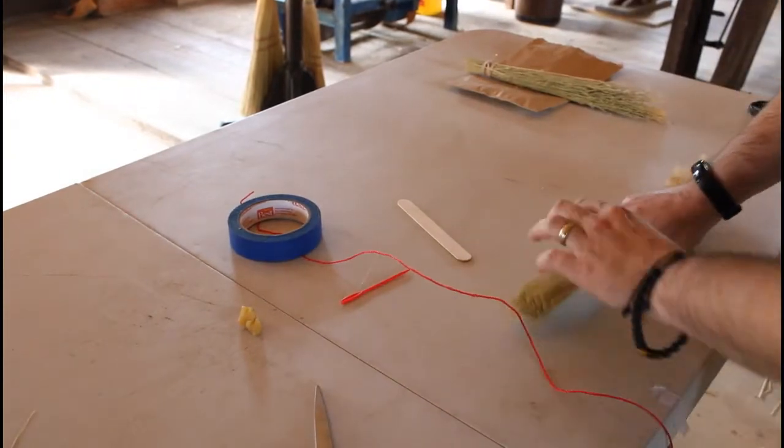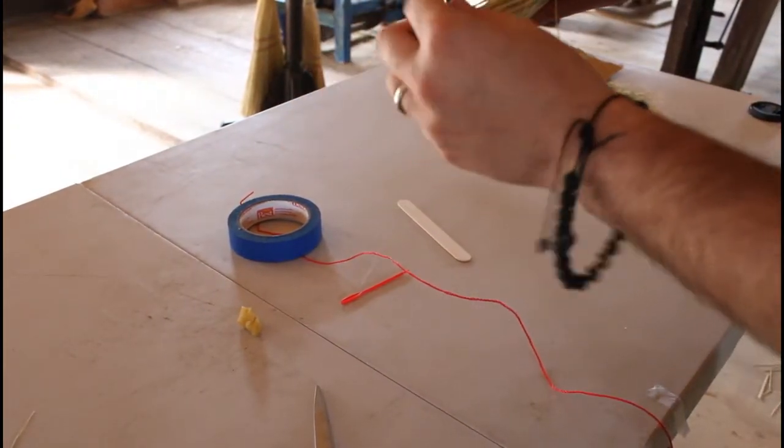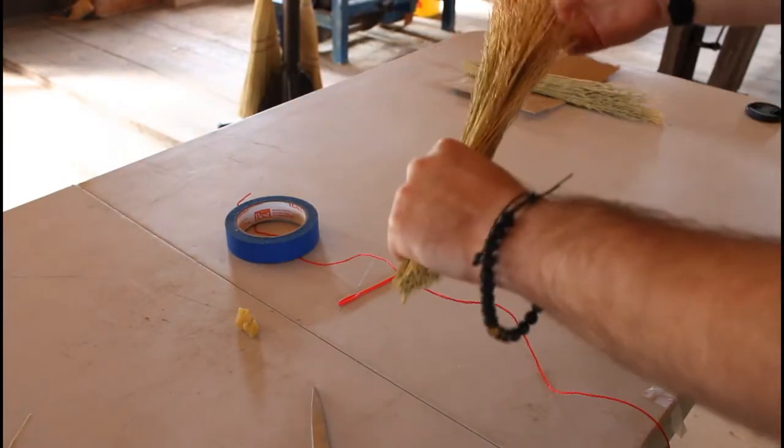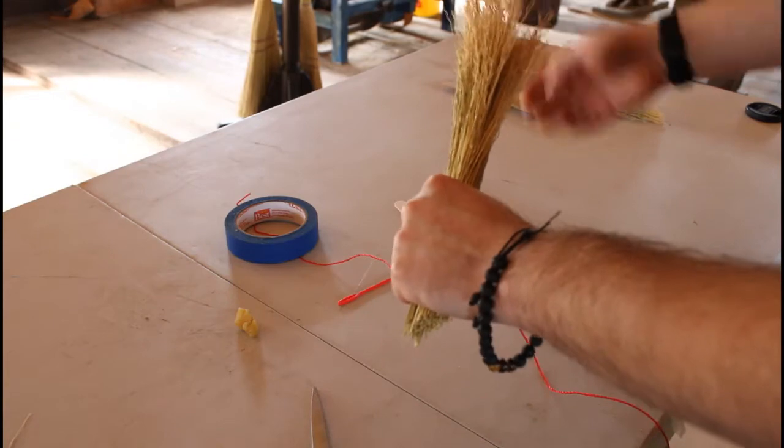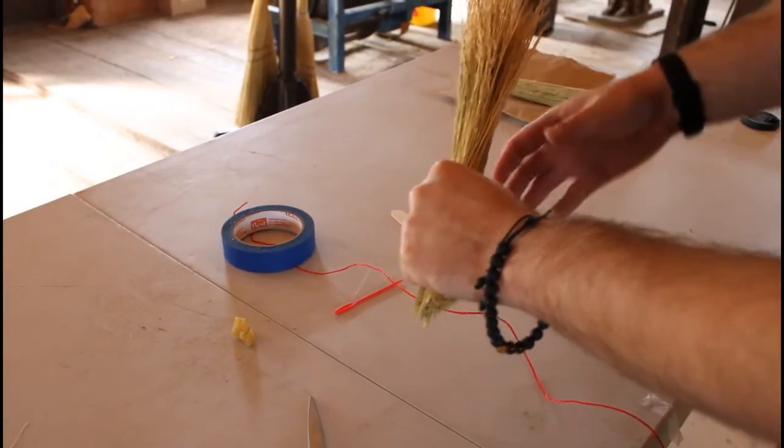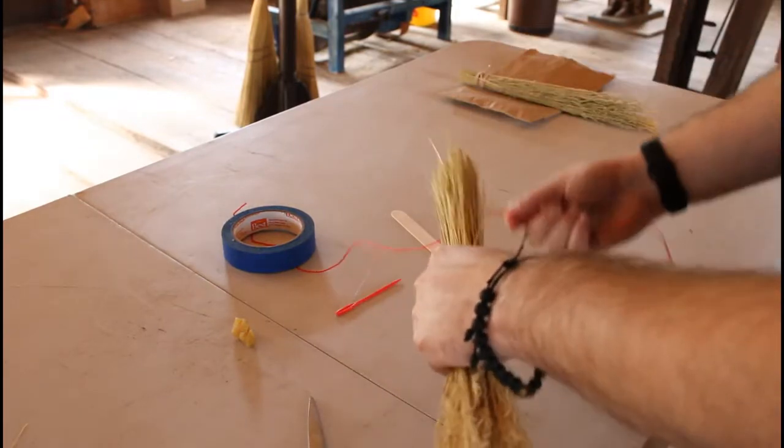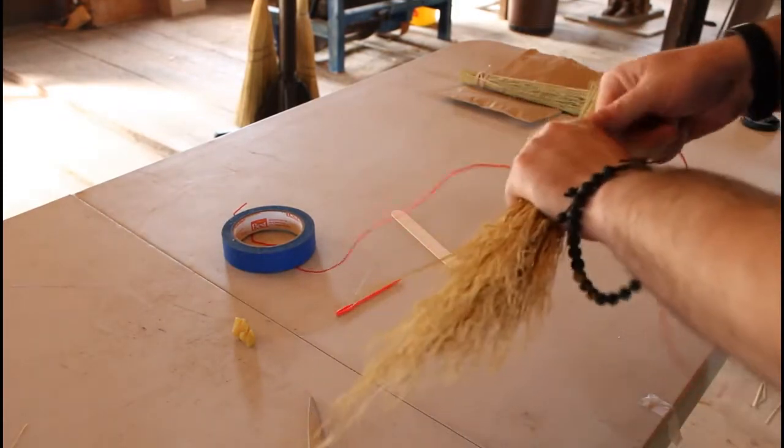You're going to take your bundle of broom corn. You're going to notice that one end is kind of stocky like this, that's called the butt. The other end is called the brush. It's this nice feathery material here that's actually going to be the main part of your broom. It's good to give it a nice tap on the table and then what you want to do next is you want to make your initial knot.